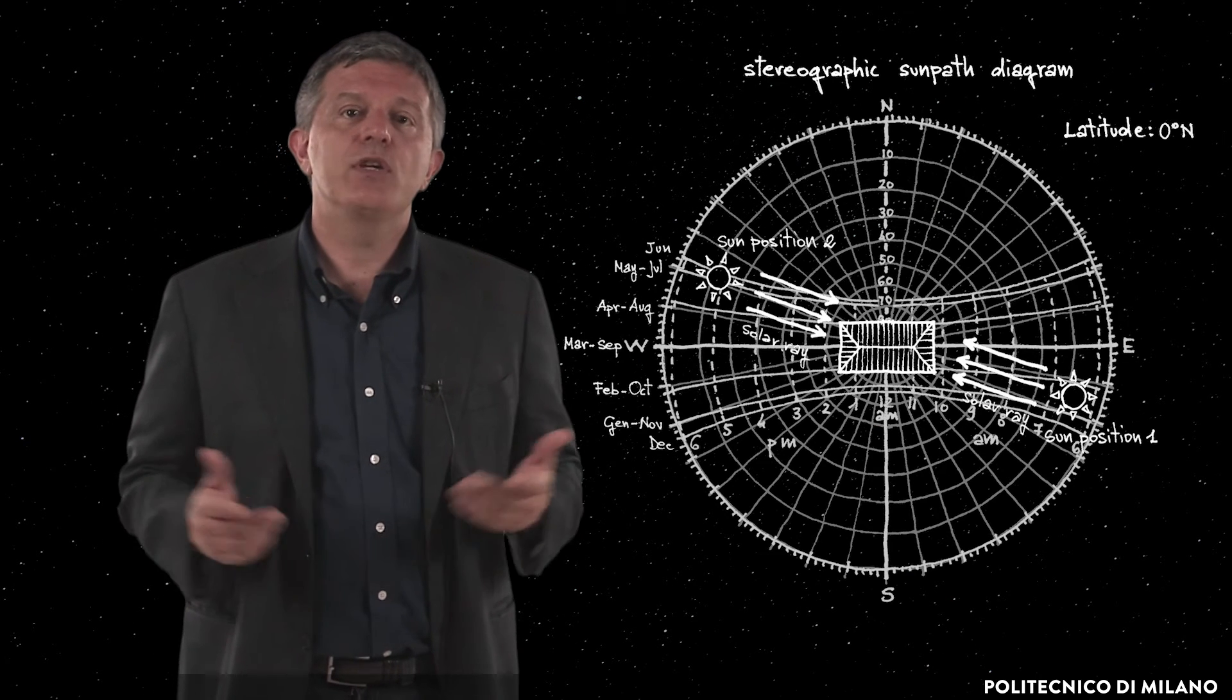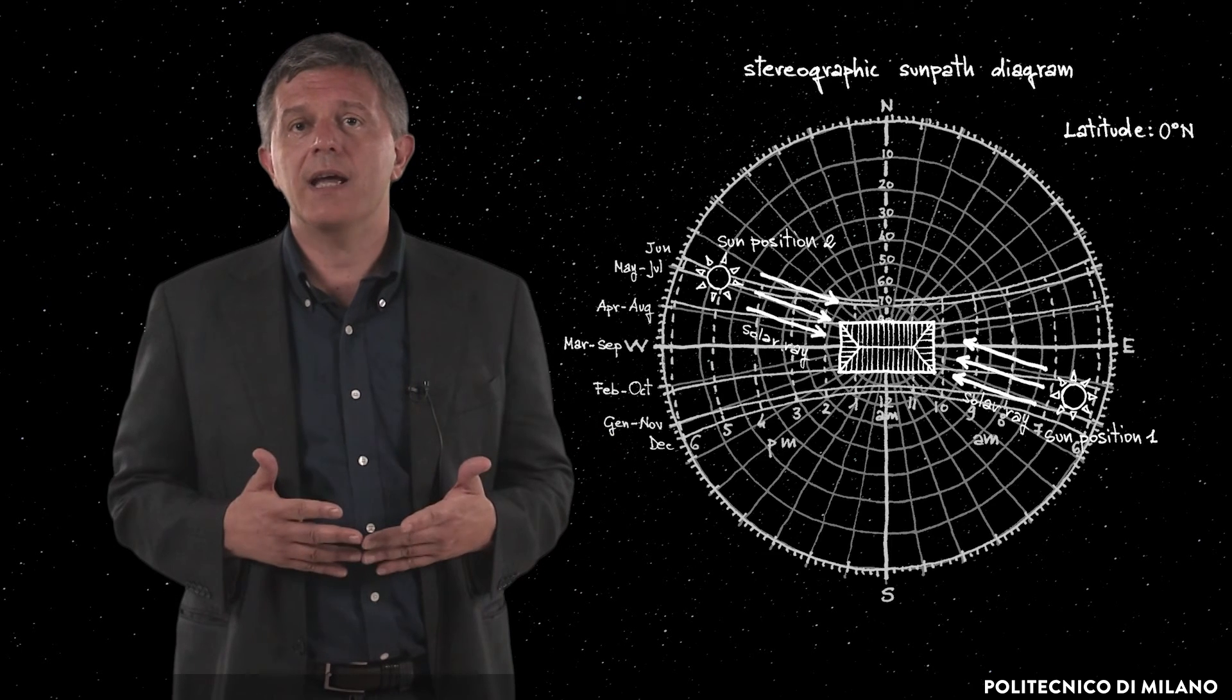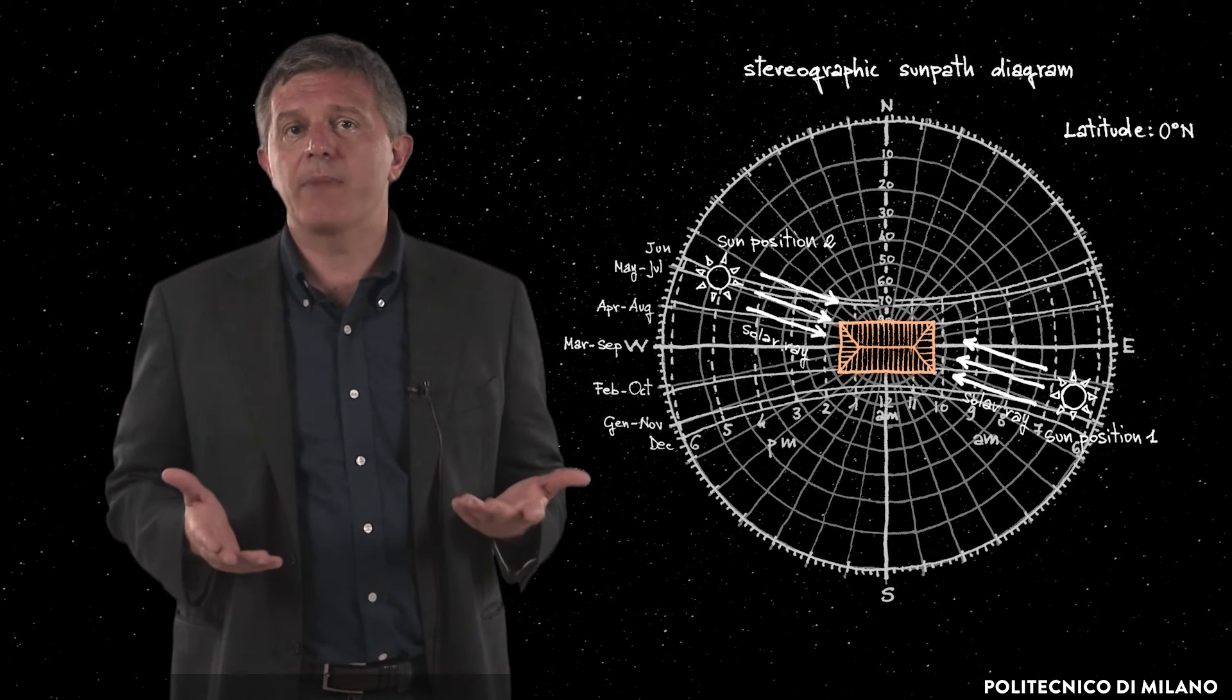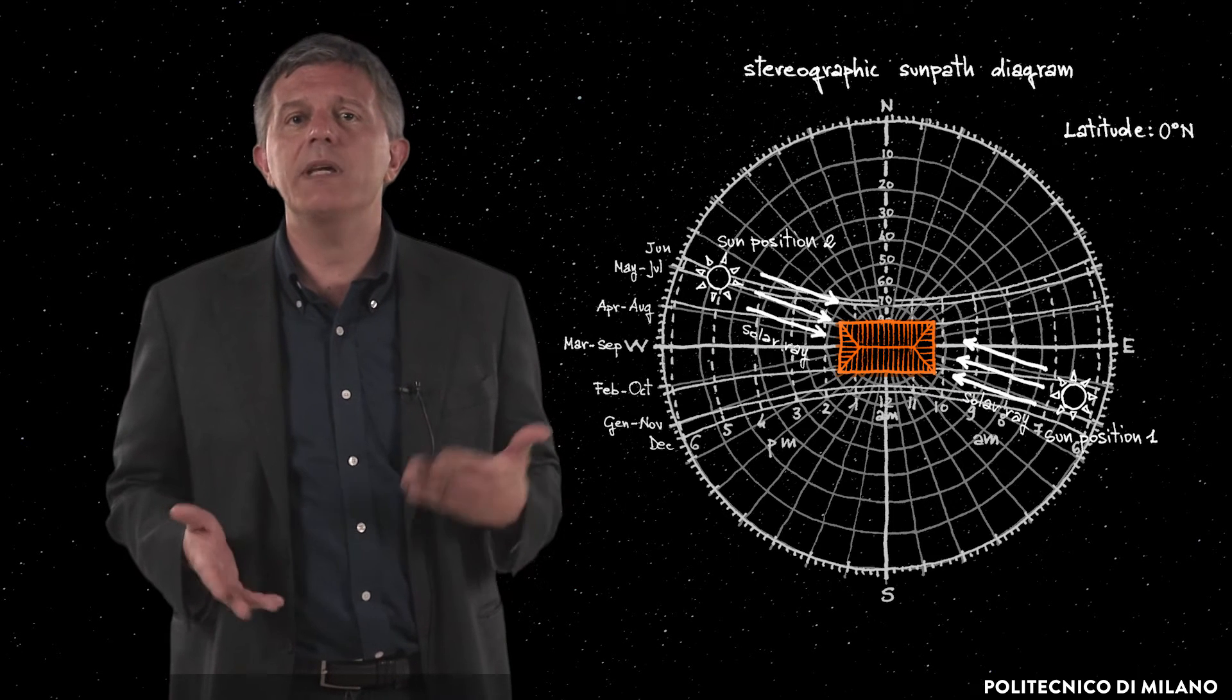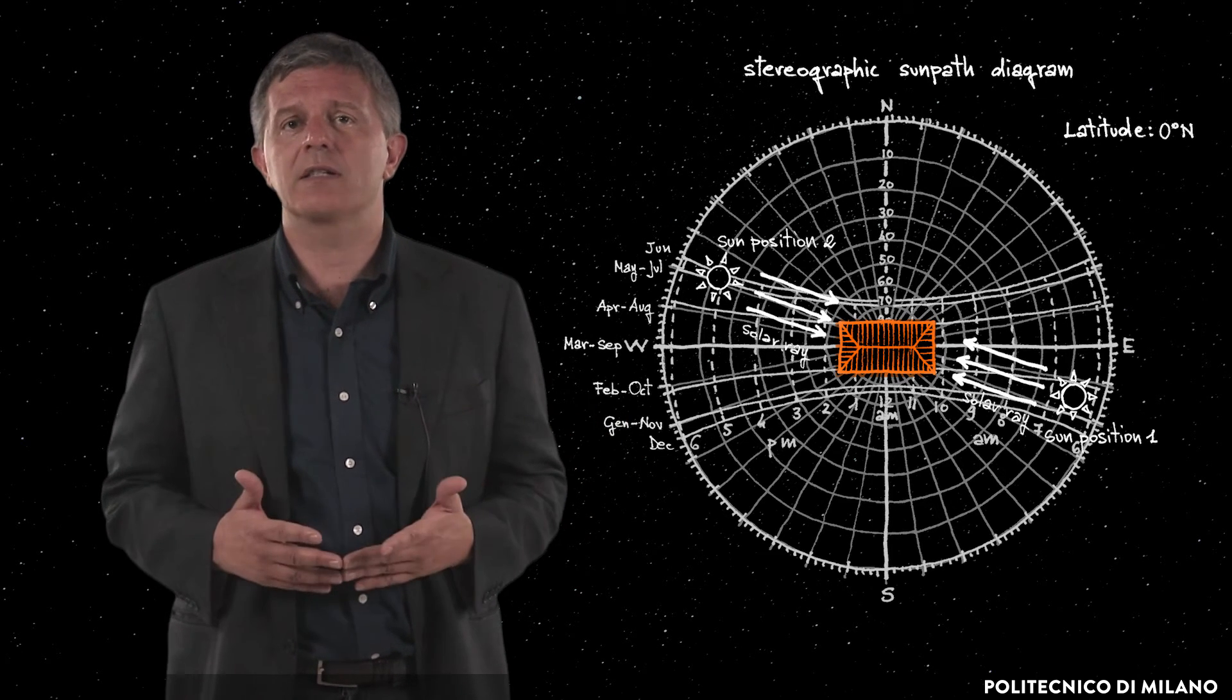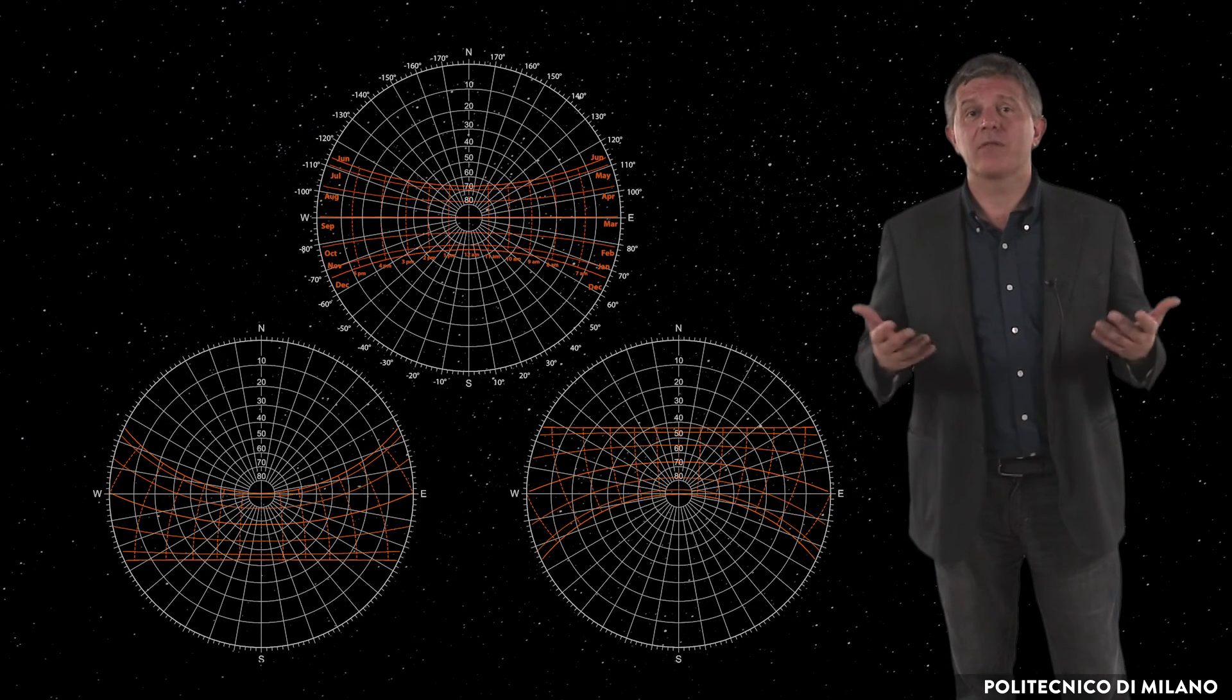The polar diagram can be used to study the position of the Sun in the different months of the year and at different hours with respect to a building or to a group of buildings in order to understand which will be the most irradiated and which the shaded surfaces in the different periods.